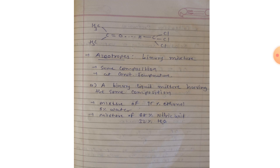There are two types of azeotropes: minimum boiling azeotrope and maximum boiling azeotrope. Solutions which show a large positive deviation from Raoult's law form minimum boiling azeotropes at a specific composition. For example, ethanol-water mixture, obtained by fermentation of sugar, on fractional distillation gives a solution containing approximately 95% by volume of ethanol and 5% water. Once this azeotrope composition is achieved, the liquid and vapor have the same composition and no further separation occurs.